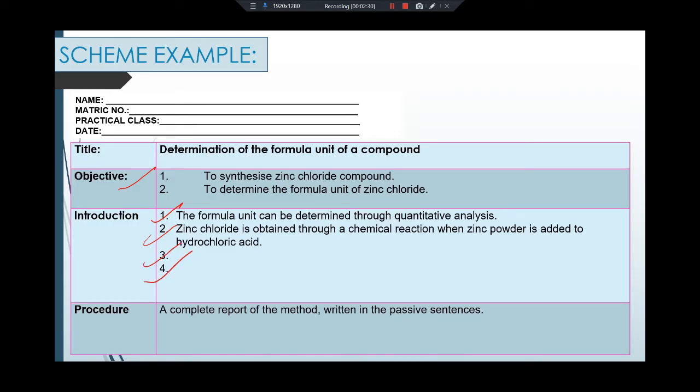Next is procedure. For procedure you just write the procedure in passive sentence. For example, number one: weigh the crucible and record the exact mass. So convert it into passive sentence. You write: crucible is weighed and the exact mass is recorded, and so on.